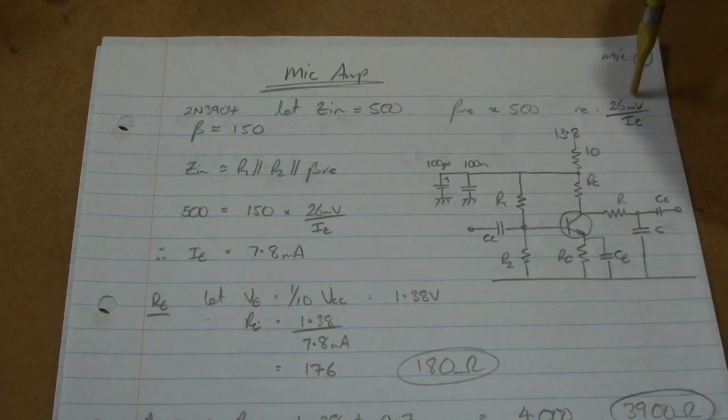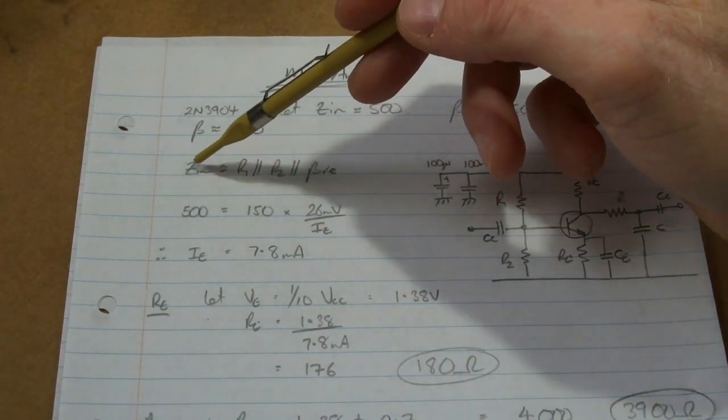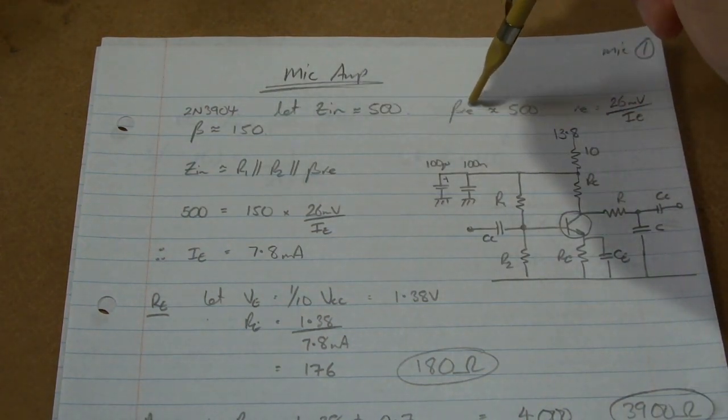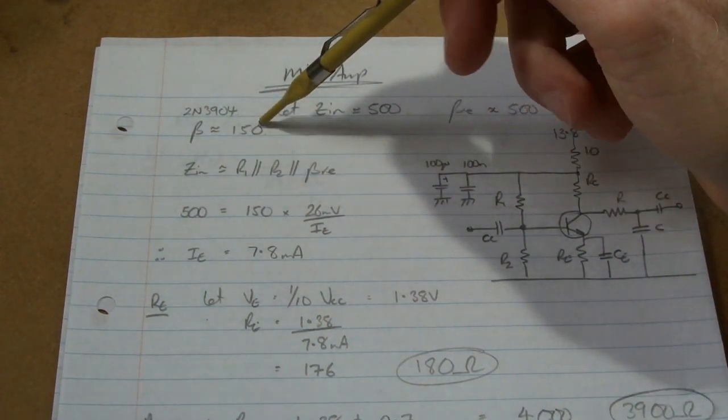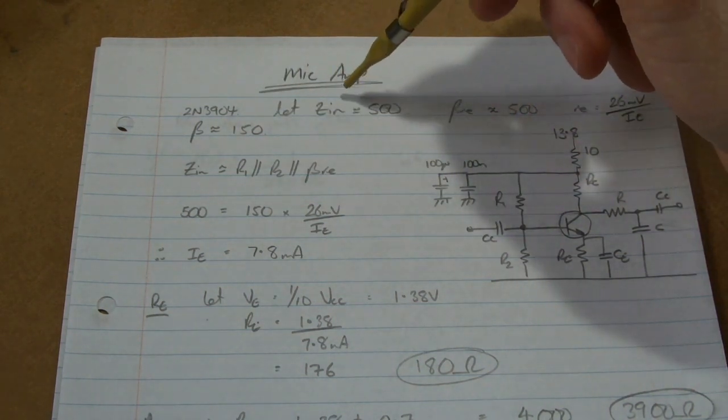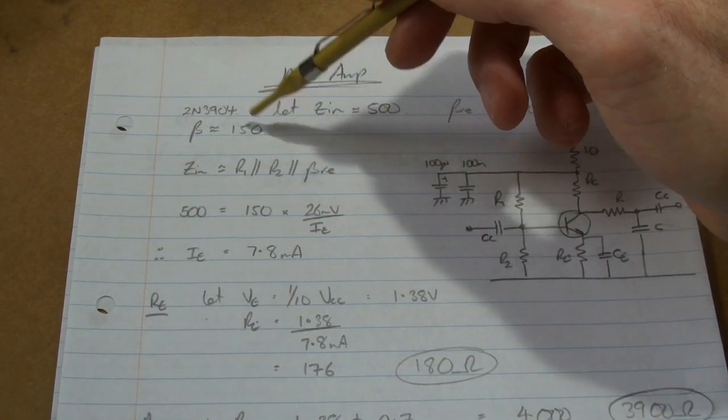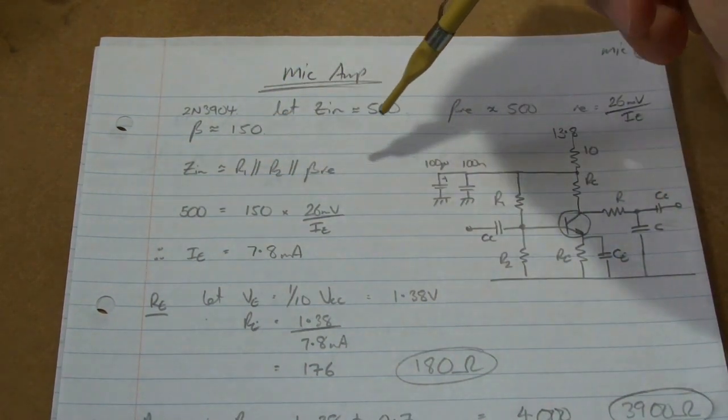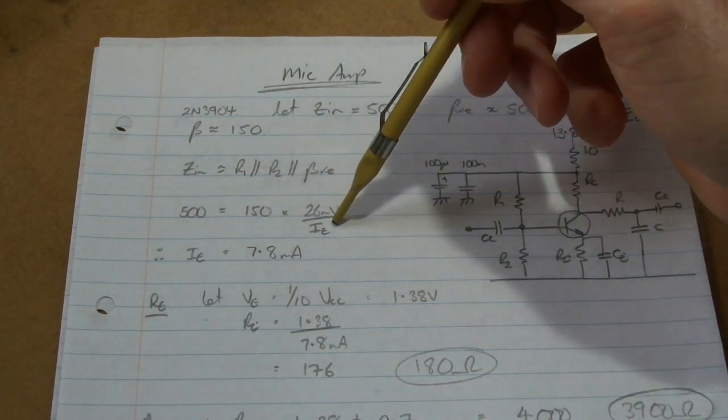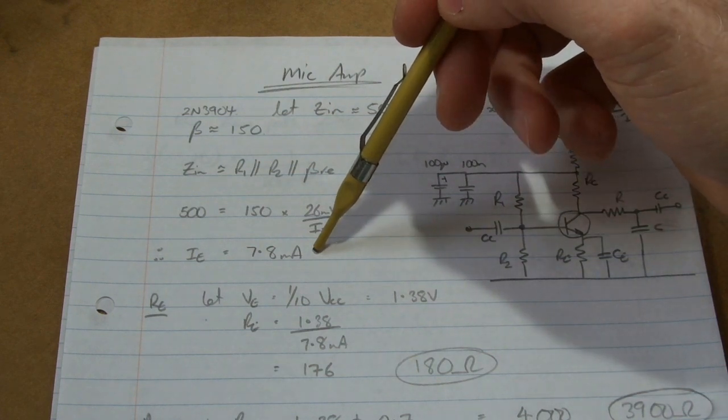So I want beta-Re to be around 500 ohms. Noting that R1 is 26 millivolts over IE. So if I take that to be the case, I want 500 ohms, and also for beta, the beta for this, it's way down at AF, that's only not up at RF, so I'm going to use a beta of 150 off the spec sheet. What I can do then is I can feed that into here, beta-Re equals 500, and solve for IE, which comes out to be about 7.8 milliamps.